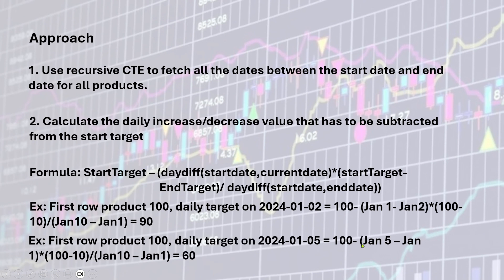For the daily target on Jan 5th: start target 100, minus date difference between Jan 1st and Jan 5th which is 4 days, multiplied by (100 minus 10 = 90) divided by (Jan 10 minus Jan 1 = 9 days). So 100 minus 4 times 10 equals 100 minus 40, which is 60. This formula handles both cases where start target is greater than end target and where start target is less than end target.